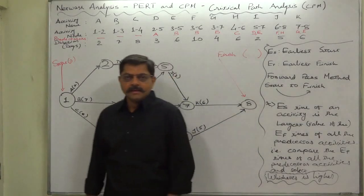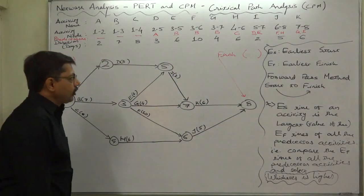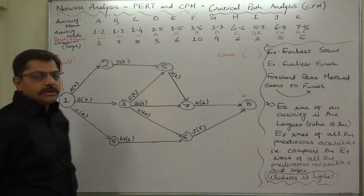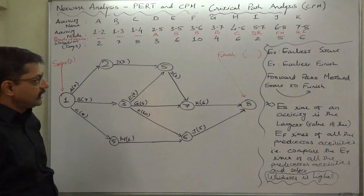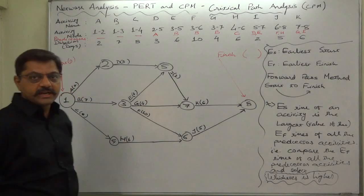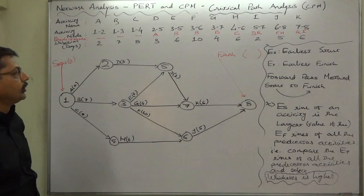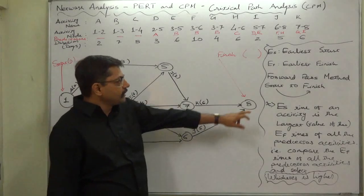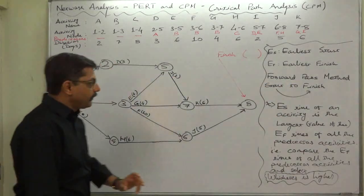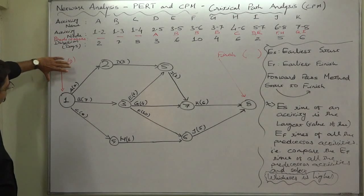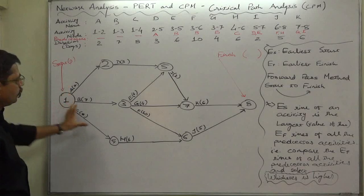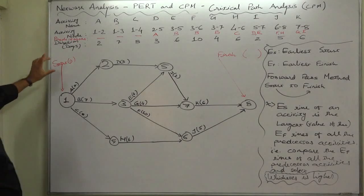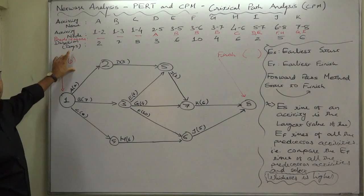Hello, namaskar and welcome. In the previous lecture we have already drawn a network or pod chart for this data. Now we are going to start a new topic: earliest start and earliest finish of each and every activity. To determine the earliest start time and earliest finish time of the activities, we are going to follow the forward pass method. Forward pass method means our journey will be from start to finish of the project, from left to right.